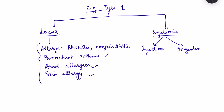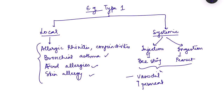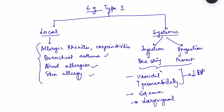Systemic hypersensitivity reaction — anaphylaxis — occurs when the allergen is injected directly into the blood or absorbed into the bloodstream. Examples include peanut allergies absorbed into the bloodstream, and bee stings injecting antigen directly into circulation. In these cases, widespread vasodilation decreases peripheral resistance and blood pressure, there is widespread edema from fluid leaking throughout the body, and laryngeal edema can obstruct breathing — requiring urgent treatment.